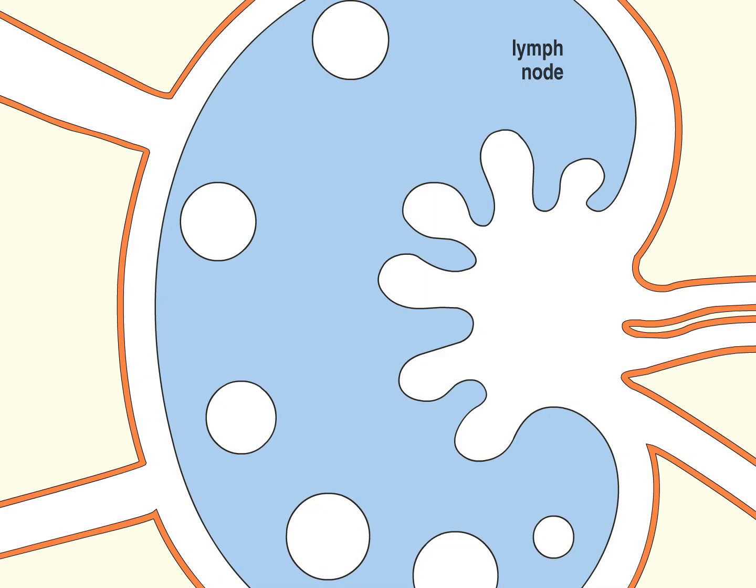The activated dendritic cells migrate from the tissues into lymphatic vessels, where lymphatic fluid drains through lymph nodes, carrying the dendritic cells with it.